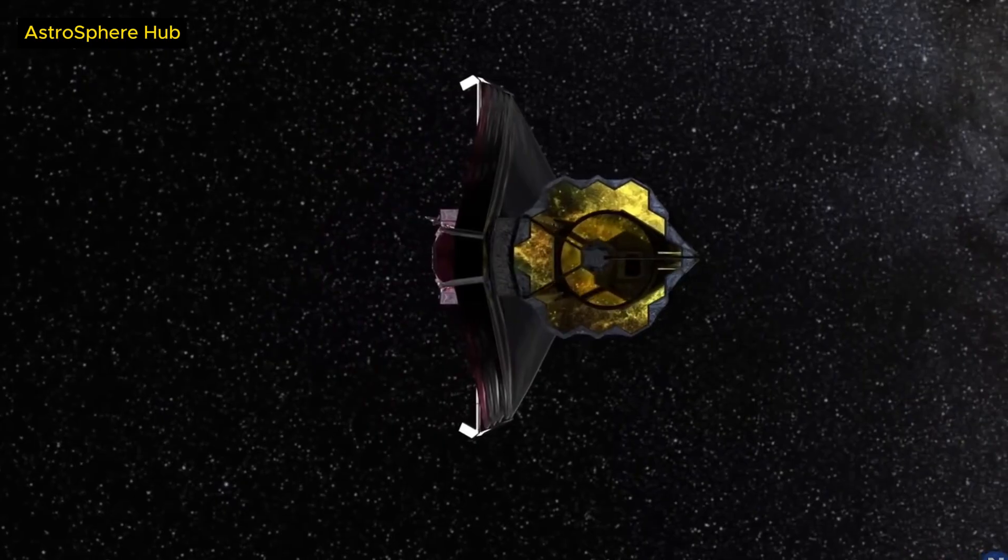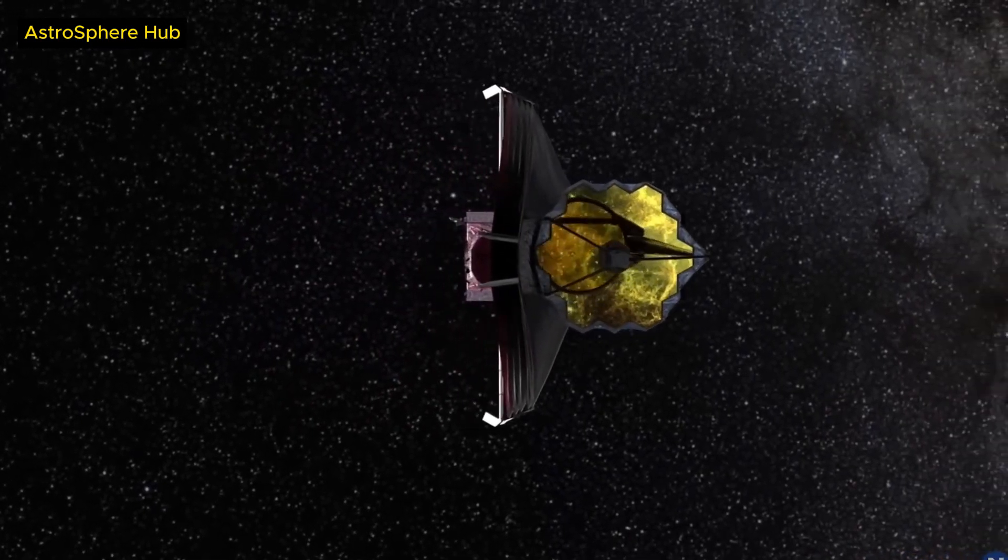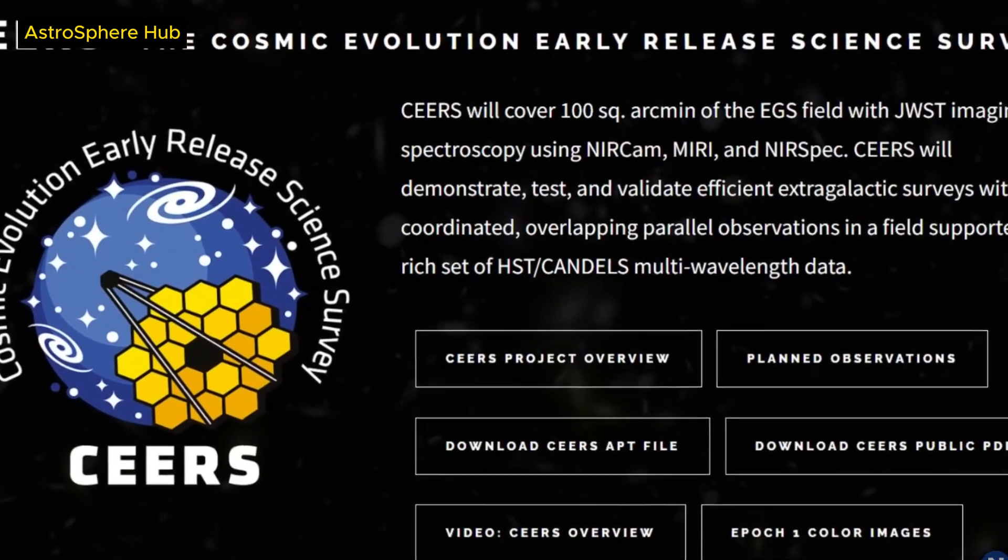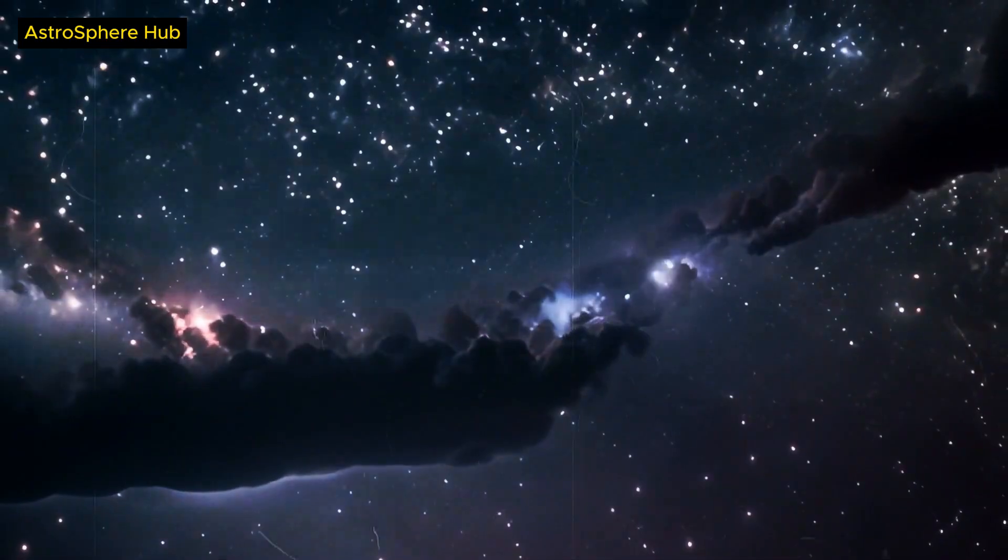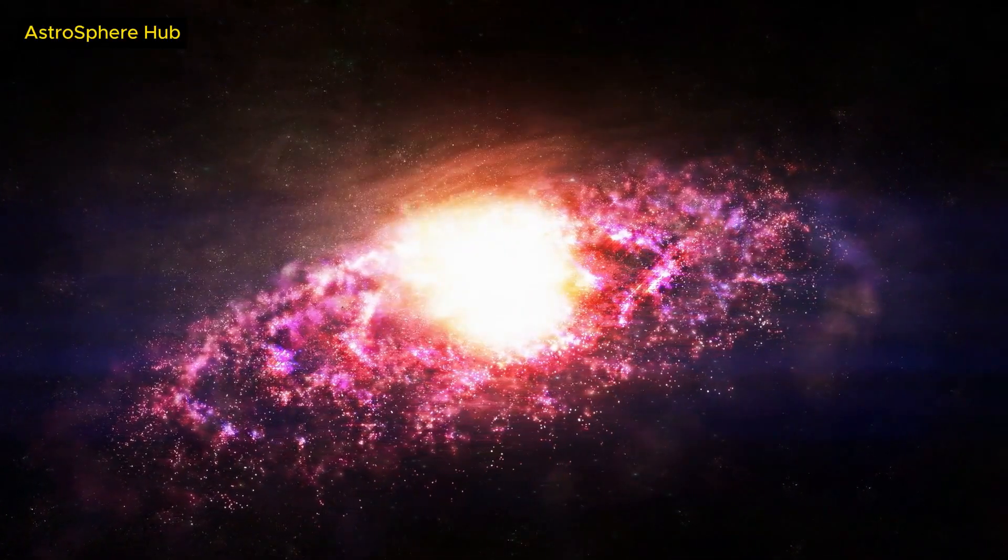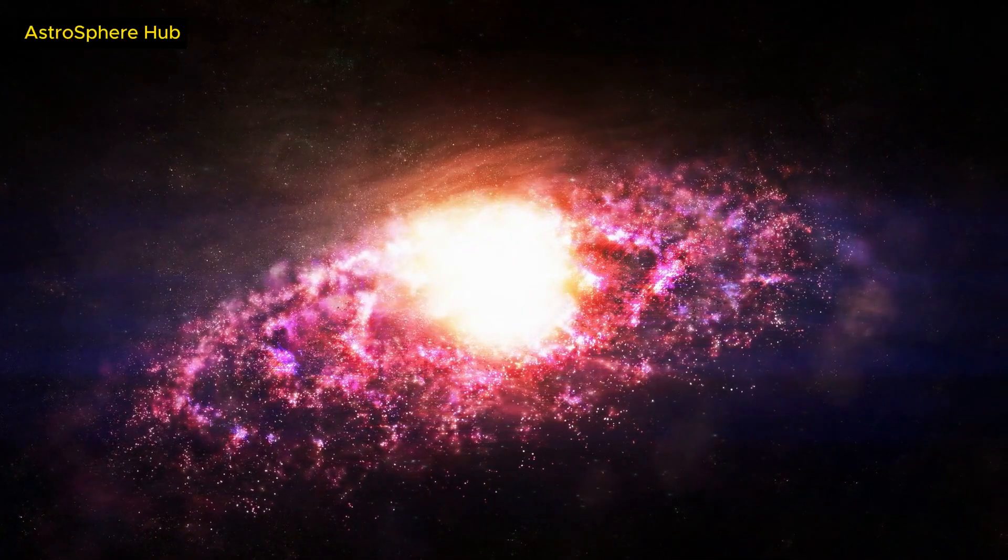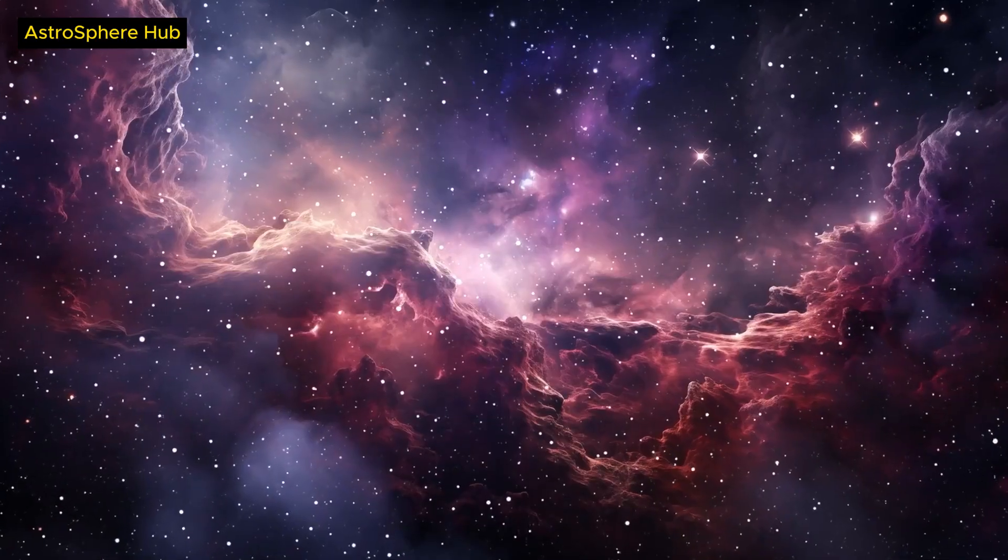Another intriguing feature of the Firefly Sparkle Galaxy is its companion galaxy, which is also at the same redshift and is located at a projected distance of about 2 kiloparsecs, or 6,500 light-years away from the Firefly Galaxy.